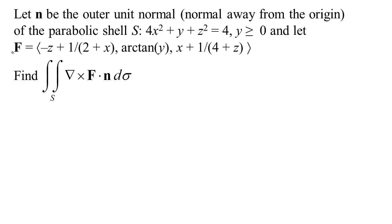Here's an example where we have some surface and a vector field, and we want to find the flux of the curl. We're looking at the alignment of not the vector field, but the curl of the vector field, which is another vector field. We're looking at the alignment of the curl to the normal to the surface — we're finding the flux of the curl.